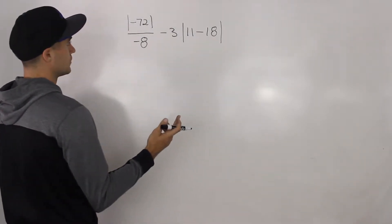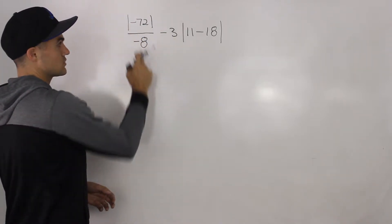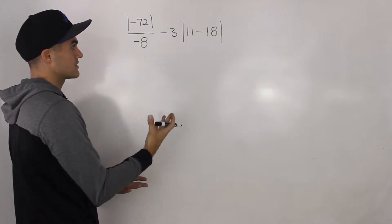If there's only a single value in the absolute value, like here, this negative 72, if a value is negative we turn it into positive. If it's positive, we keep it positive.